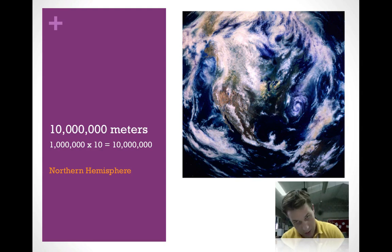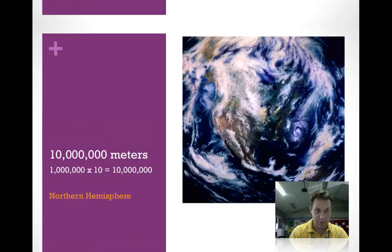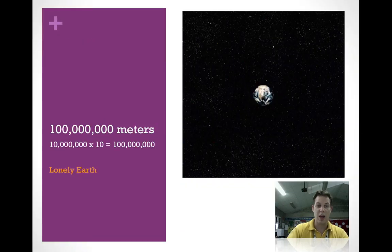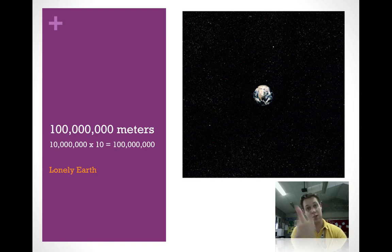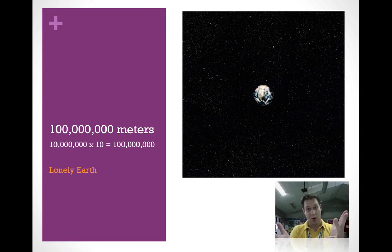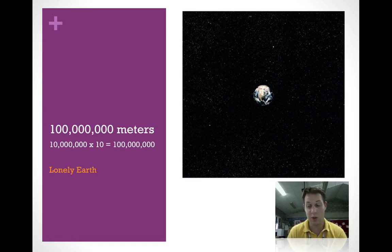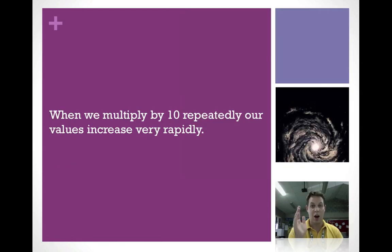Take 10,000,000 meters times 10 and we have 100,000,000 meters — and we have lonely Earth all by its lonesome. So multiplying by 10 just nine times, we can go from just seeing a man on a picnic blanket to a view of the entire Earth. You can see how multiplying by 10 makes our values increase very, very rapidly.